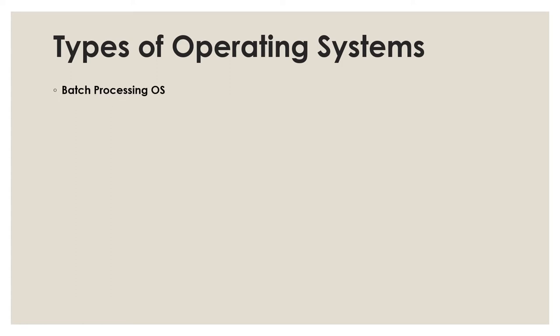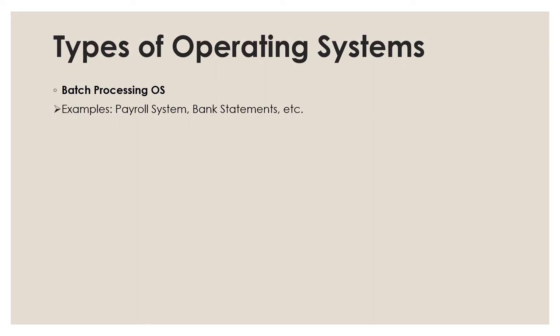The next topic is types of operating systems. First is batch operating system: this type does not interact with the computer directly. An operator takes similar jobs with the same requirements and groups them into batches. It is the responsibility of the operator to sort jobs with similar needs. Examples include payroll systems, bank statements, etc. Next is distributed operating system: this is designed to share its workload over multiple servers, sharing data and resources among multiple servers to get maximum efficiency. Examples are Unix, Linux, etc.